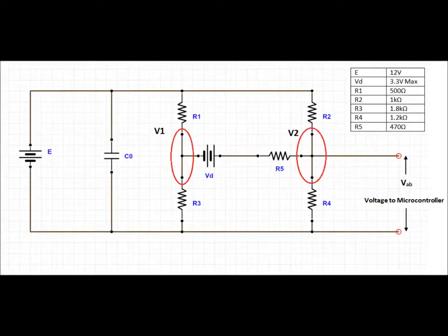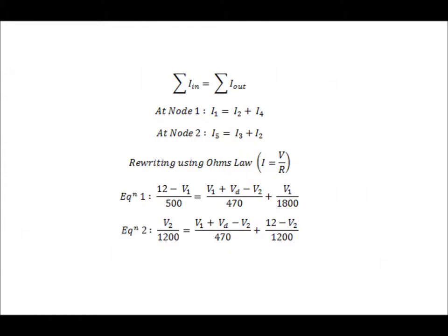So, we need to find the voltage V2 to know what input voltage to program into a microcontroller. The easiest way to do this is with nodal analysis, using the fact that the sum of currents entering a node equals the currents leaving the node. After deriving these equations, we can rewrite the currents in terms of voltage and resistance.